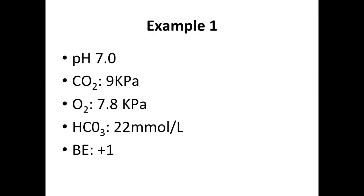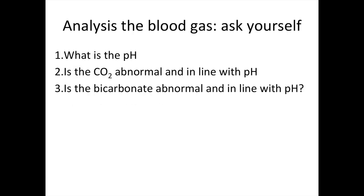Now we are going to look at the first example. Regarding the base excess: if there is a negative base excess, it indicates that additional alkali is needed to neutralise an acid. The oxygen level can be helpful for the respiratory status of the patient, but it's not actually needed to establish whether the patient has a respiratory or metabolic acidosis or alkalosis. So ask yourself these three questions: what is the pH? Is the carbon dioxide abnormal and in line with the pH? Is the bicarbonate abnormal and in line with the pH?